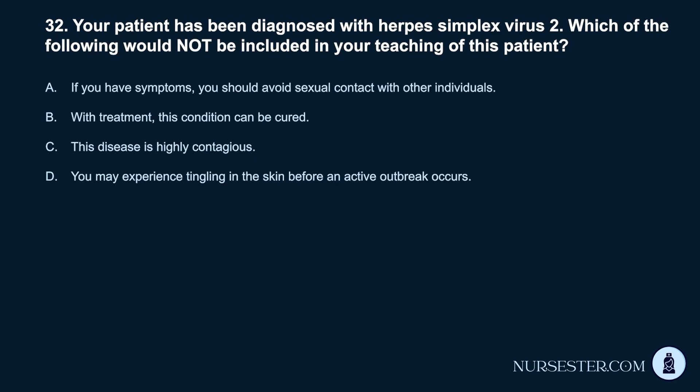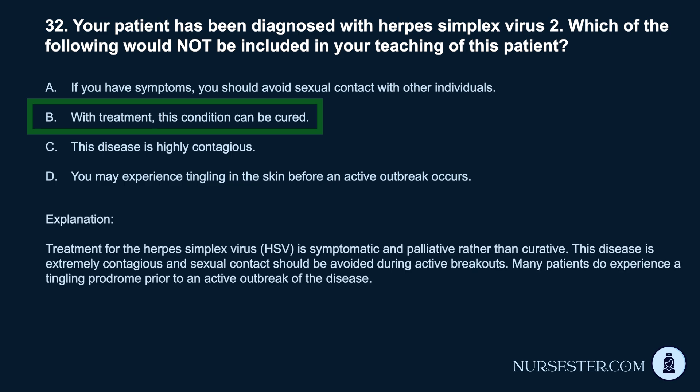Question 32. Your patient has been diagnosed with herpes simplex virus 2. Which of the following would not be included in your teaching? a. 'If you have symptoms, you should avoid sexual contact with other individuals.' b. 'With treatment, this condition can be cured.' c. 'This disease is highly contagious.' d. 'You may experience tingling in the skin before an active outbreak occurs.' Correct answer: b. Treatment for herpes simplex virus (HSV) is symptomatic and palliative rather than curative. This disease is extremely contagious and sexual contact should be avoided during active breakouts. Many patients experience a tingling prodrome prior to an active outbreak.